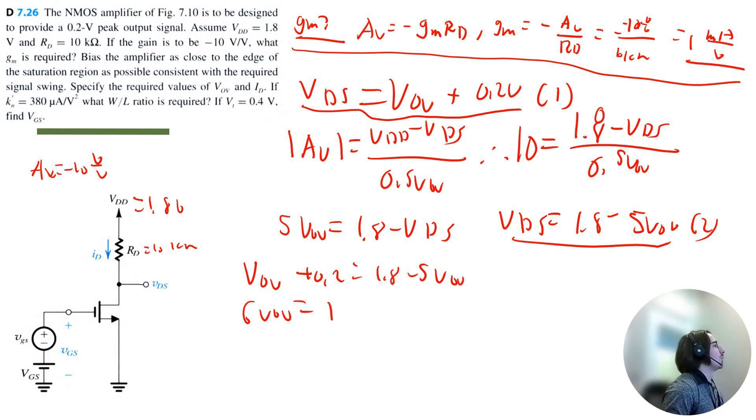So we get 6 V overdrive is equal to 1.6. So therefore V overdrive is 1.6 divided by 6, which is equal to 0.27 volts. And thus, we can now figure out VDS is equal to 0.27 volts plus 0.2 volts, which is equal to 0.47 volts.